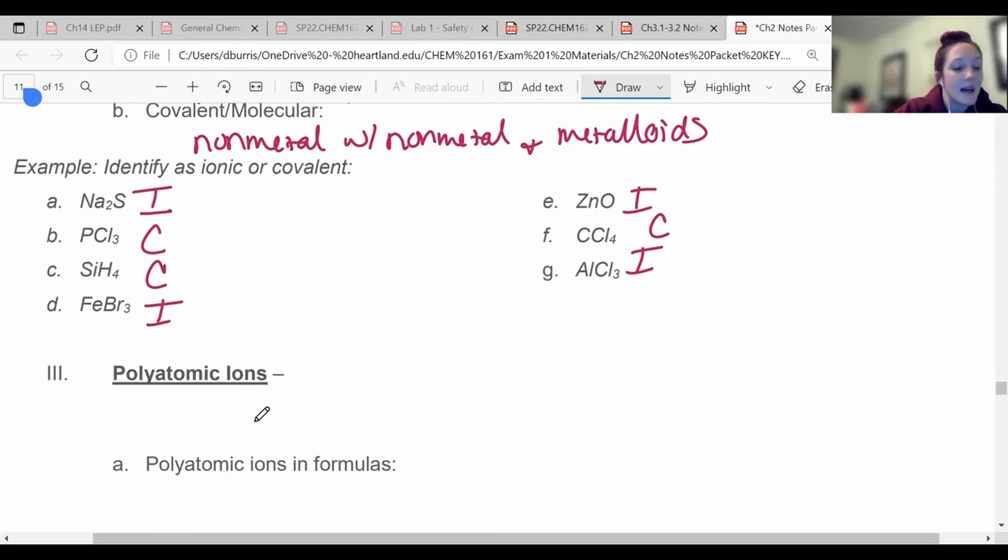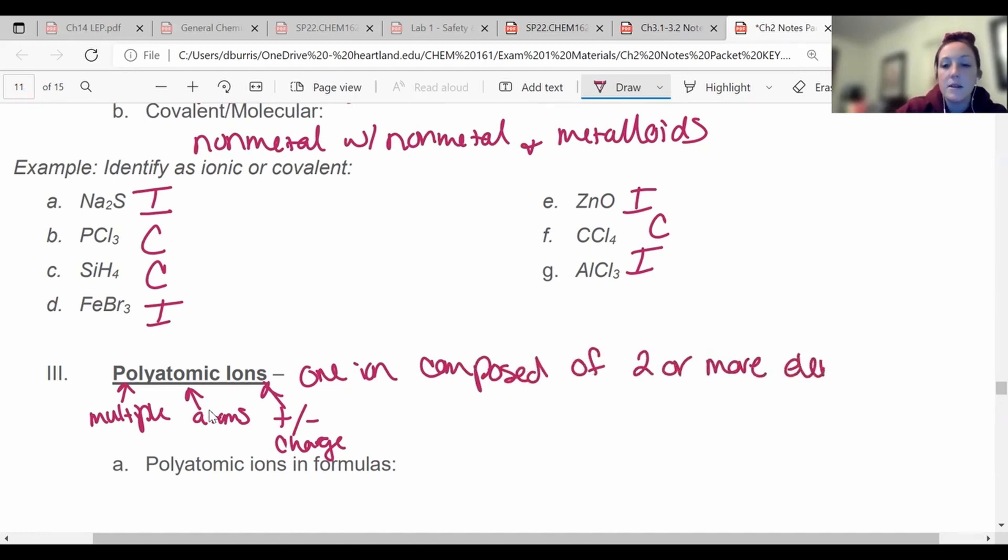Okay, so polyatomic ions. Polyatomic ions, let's break this word down. Poly means multiple or many. Atomic would mean atoms. An ion means something with a positive or negative charge. So a polyatomic ion is something that has a positive or negative charge that's made up of multiple atoms. And that's literally what it is. It is one ion composed of two or more elements and it all together has a net charge.